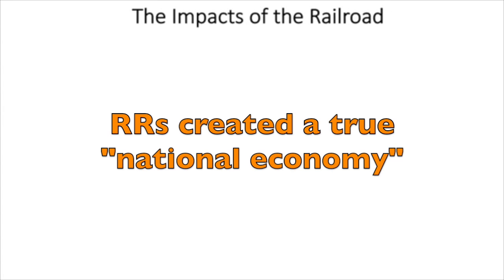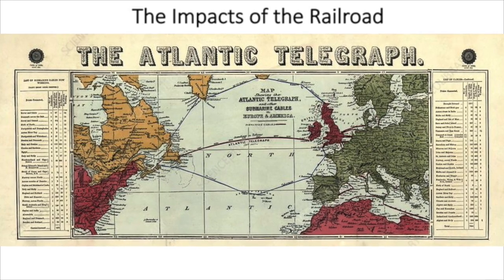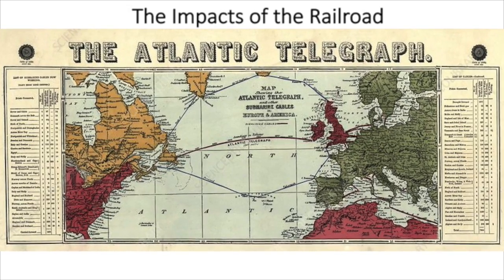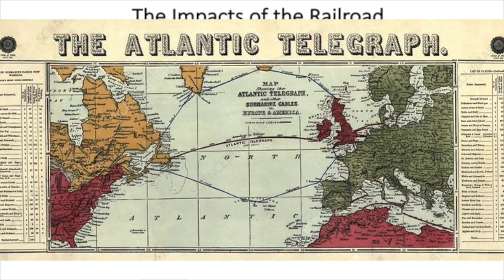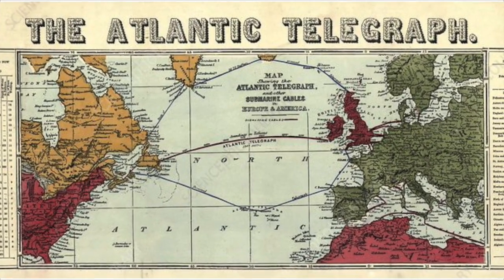Now, what were the impacts of railroads during period six? It was very reasonable to order parts or goods from other parts of the country, and those goods being able to reach their destination a lot quicker thanks to railroads. As railroads and telegraph lines spread across the continent, they increased the pace of commerce and ushered in a new era of instantaneous communication. During this time period also, the first transatlantic telegraph line was placed so that now North America and Europe could communicate pretty much instantaneously instead of waiting weeks and weeks for news to travel overseas.